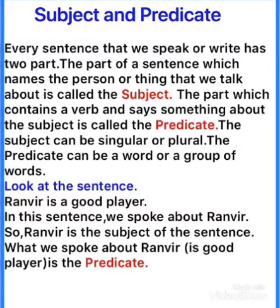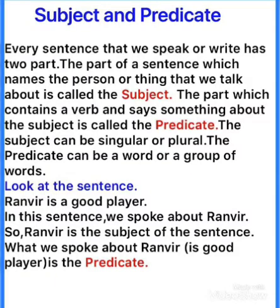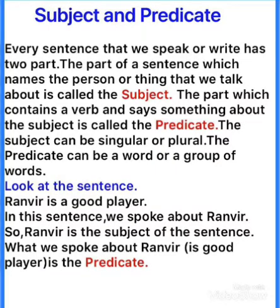The part which contains a verb — sentence ka doosra part jis mein verb hai, aur jis mein says about something, the subject is called predicate. Jo subject ke baare mein koi baat kar raha hai, usse kya bolenge? Predicate. So sentence ka part jis mein kisi person or thing ka name hai, jiske baare mein hai, woh subject hai. Aur ek sentence mein second part kya hai jis mein verb hai, aur jis mein subject ke baare mein baat ho rahi ho, that is predicate.